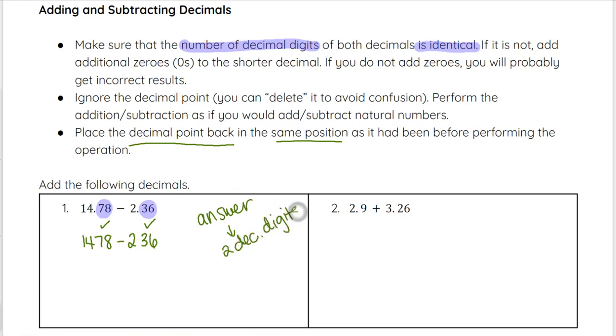So we will go ahead and subtract 14.78 minus 236. When we do that, we subtract down the columns. Eight minus six is two, seven minus three is four, four minus two is two, and one minus zero essentially is one or just bring the one down.